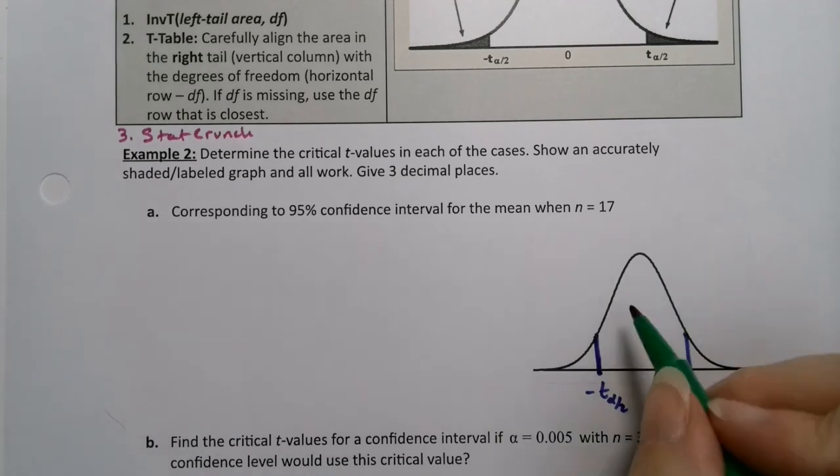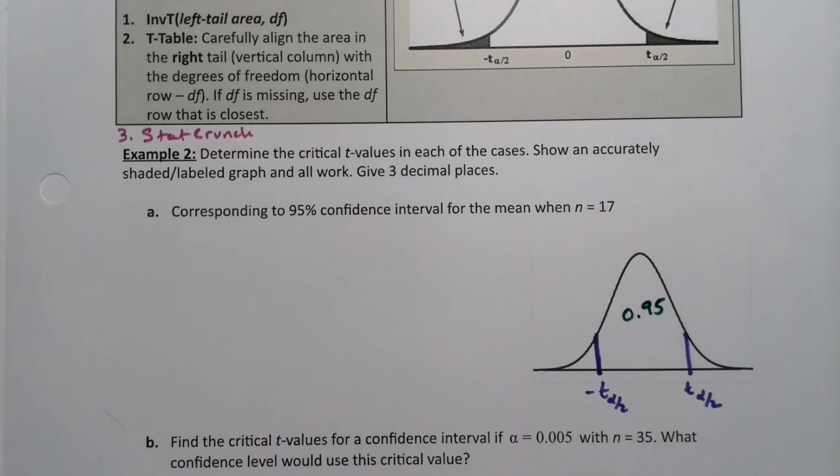So this would be 0.95 in the center. And then the area in the tails is of particular interest to me because I need to find what it is. It should be alpha over 2.